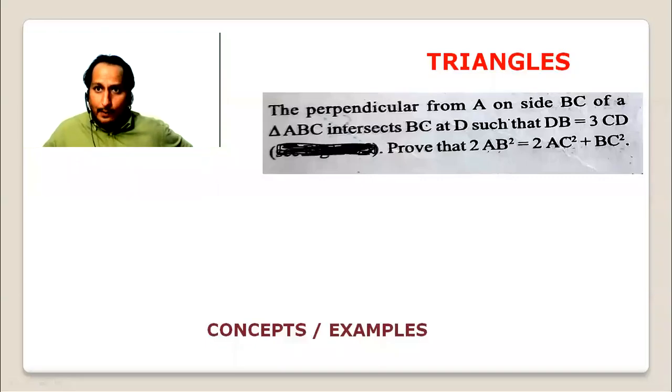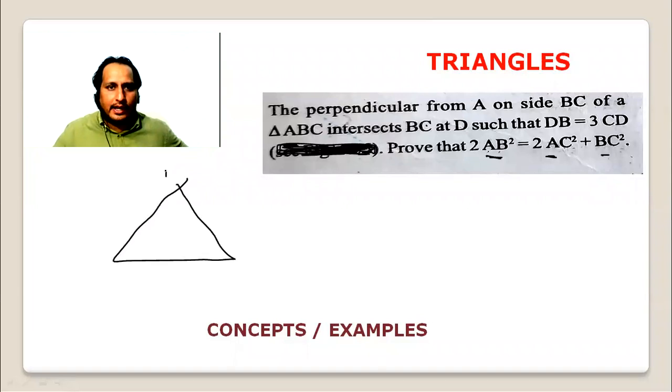The perpendicular from A on BC of a triangle ABC intersects BC at D such that BD equals 3CD. Prove that 2AB² = 2AC² + BC². So triangle ABC, and BC has a point D on it such that BD equals 3CD.